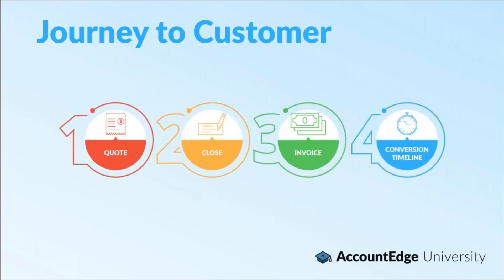Their journey from a lead to a customer probably starts when you give them their first quote. You'll send them out what's essentially a sales transaction in AccountEdge, and then hopefully close that customer. They'll accept your quote, maybe give you a deposit, letting you then issue them an invoice. Once they become an invoice in AccountEdge, as that sales transaction is recorded in your general ledger, you'll be able to track their status going from a lead to a customer and manage that conversion process.